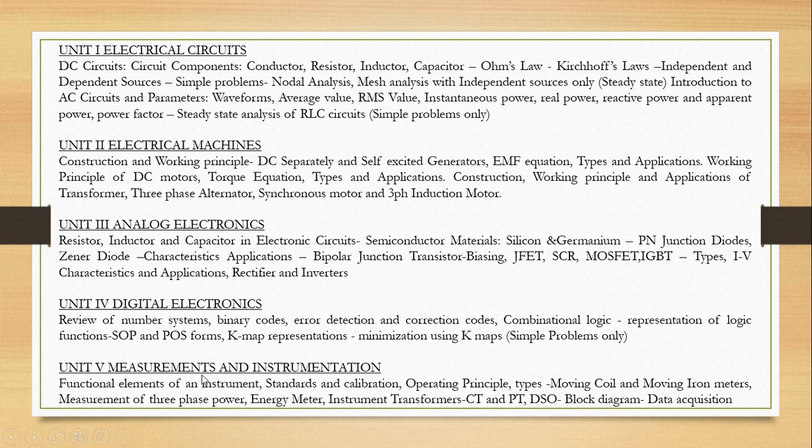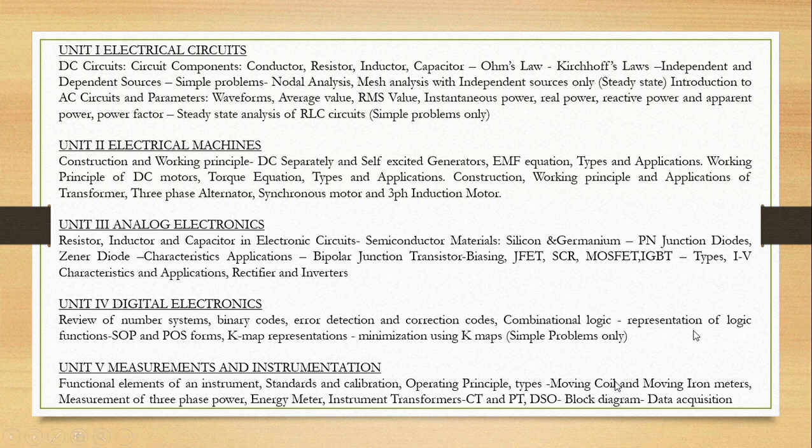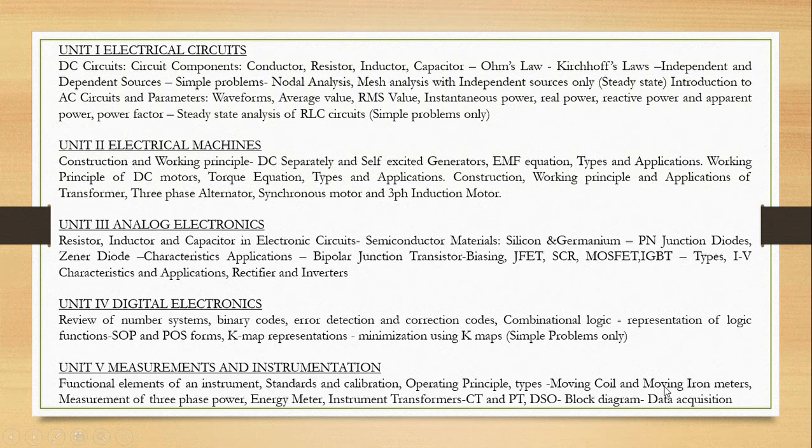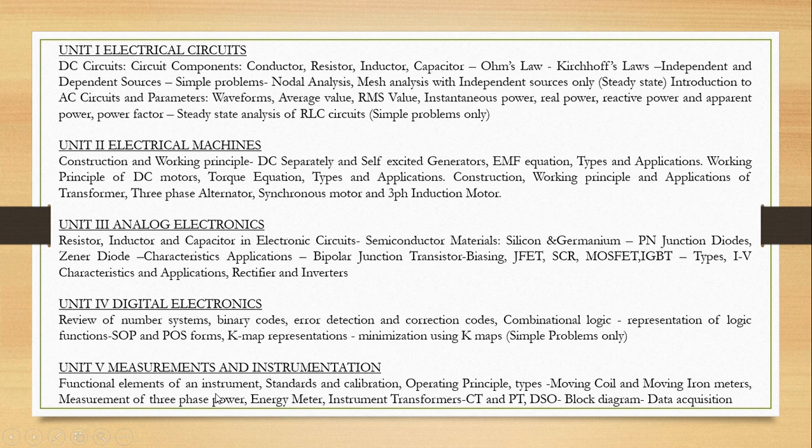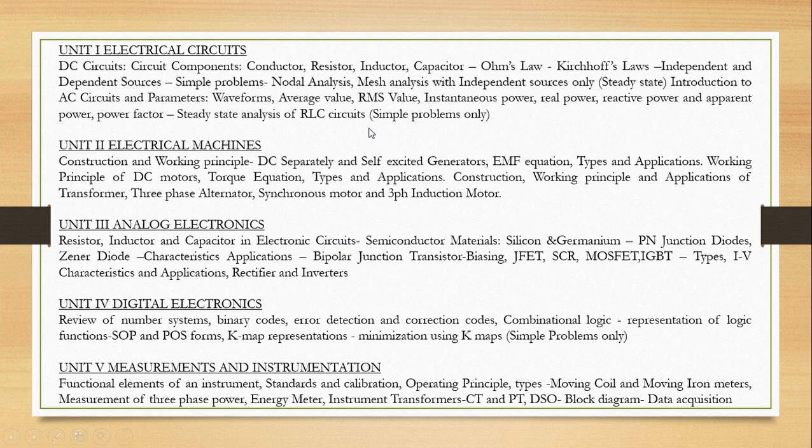In unit number 5, measurements and instrumentation. Here, moving coil and moving iron instruments are used to measure both AC and DC parameters. Also, we are going to know about the measurement of three phase power, energy meter, instrument transformer, CT PT, DSO, block diagram, data acquisition. All of these details are given in the syllabus. And we are going to know about the concepts involved in this syllabus.